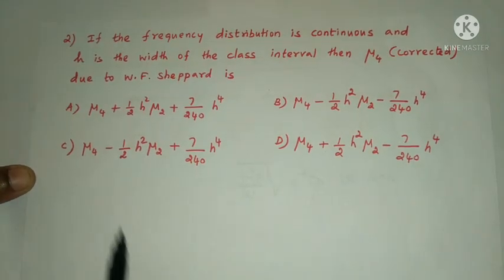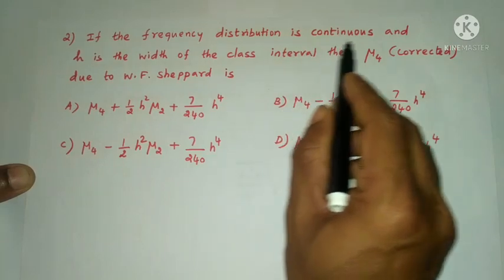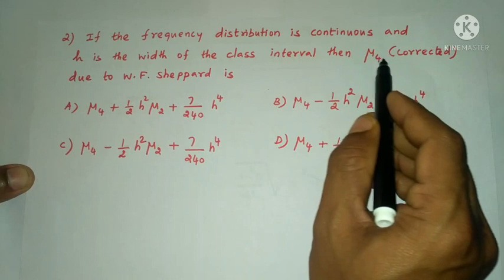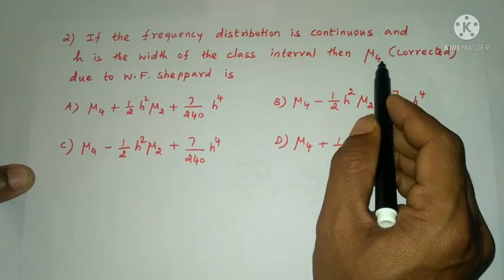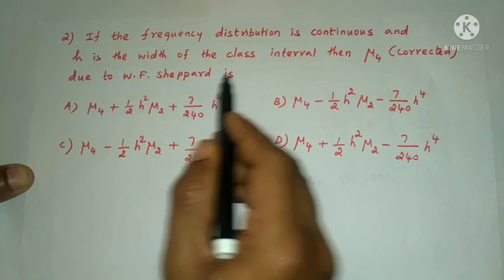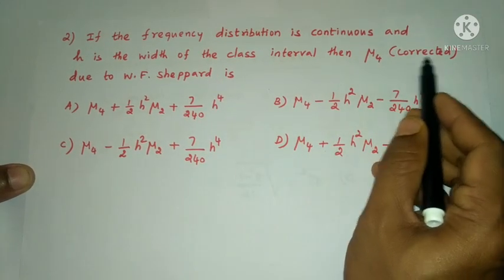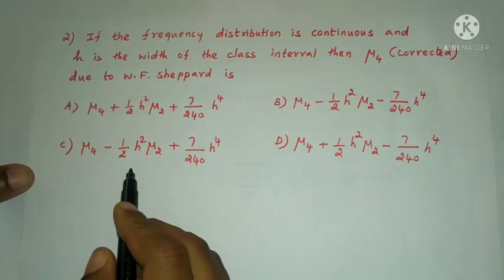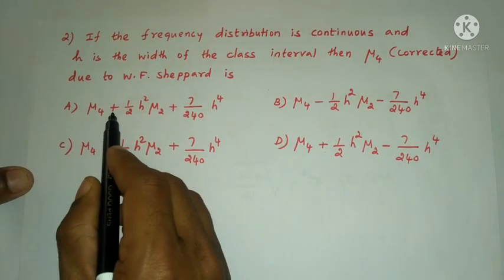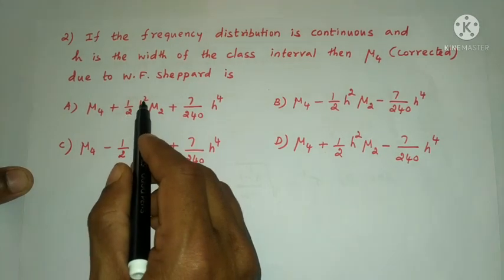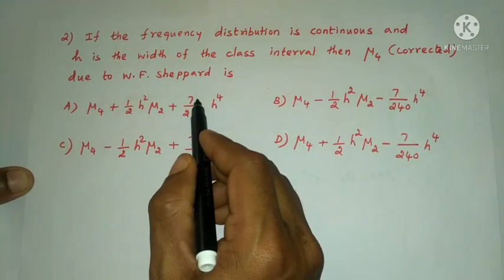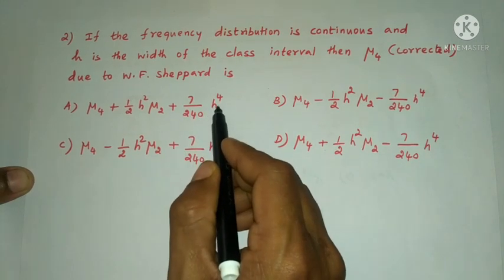Next question: if the frequency distribution is continuous and H is the width of the class interval, then the mu4 corrected value due to Sheppard's correction is — option A: mu4 plus 1/2 H squared mu2 plus 7/240 H to the power 4.